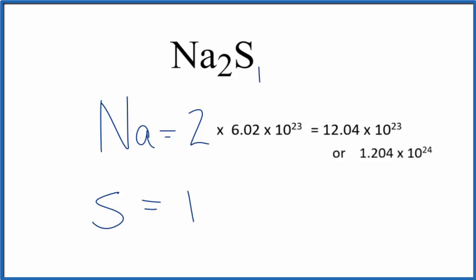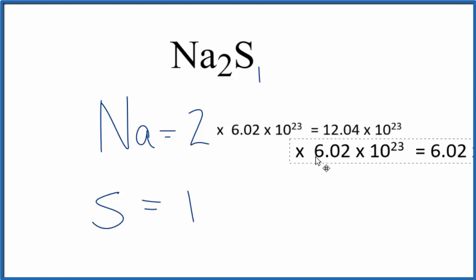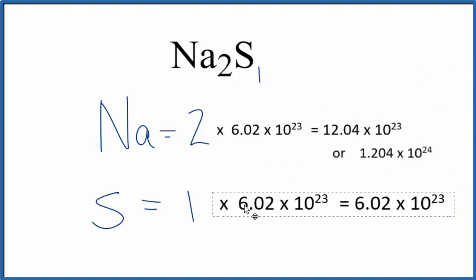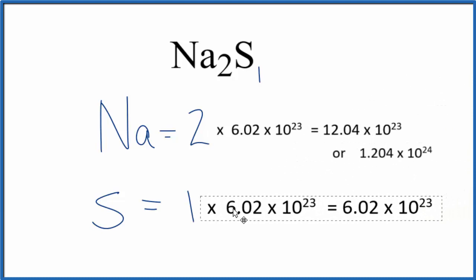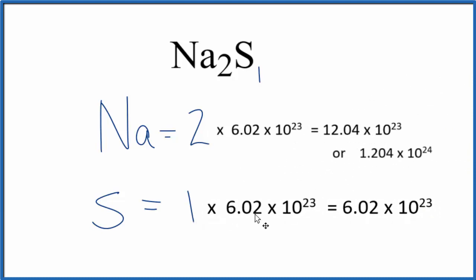Likewise, if you want to know how many sulfur atoms you'll have, you take one and you multiply that by Avogadro's number, 6.02 times 10 to the 23rd. That'll give you the number of sulfur atoms in one mole of Na2S, sodium sulfide. This is Dr. B, and thanks for watching.